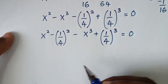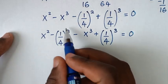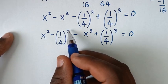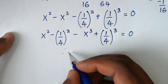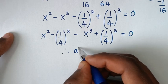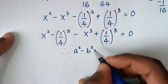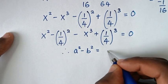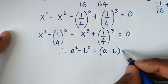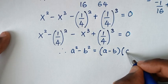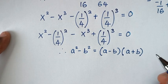Then in the next step, the first part is in the form of a perfect square. Therefore we will apply the difference of squares rule, which is a squared minus b squared equals (a minus b)(a plus b).